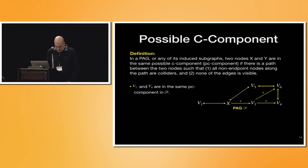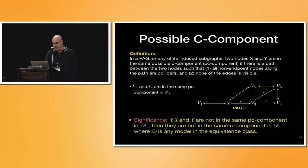One of the properties that we use is the possible C component, which means that two nodes, X and Y, are in the same possible C component because we don't have crisp C components. If there is a path between the two nodes such that all non-endpoints nodes along the paths are colliders and none of the edges is visible. For example, V1 and V4, here we can see that there is this path V1, X, V3, V6, V4, that all non-endpoints are colliders and there is no V arrow here. Then those are possibly in the same C component. The importance of that is the other side of the replication, that if they are not in the same PC component, then we can know that they are not in the same C component. And these will hold also in subgraphs.